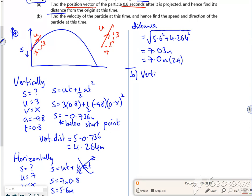So vertically, S is minus 0.736, U is 3, V we want, A is minus 9.8, T is 0.8. So use any one you want, so I'm going to use V equals U plus AT because it's easy, so that's 3 plus minus 9.8 times 0.8, so that's going to be minus 4.84 metres per second, put my units in, I keep forgetting.